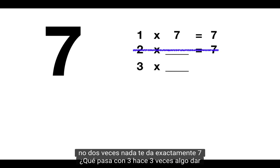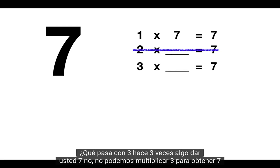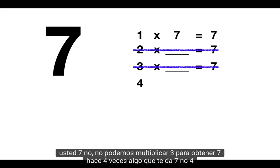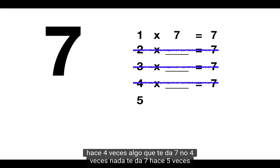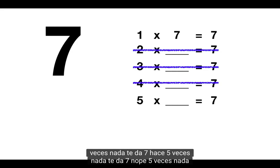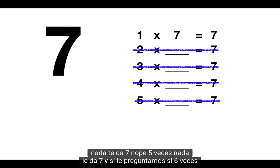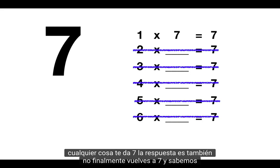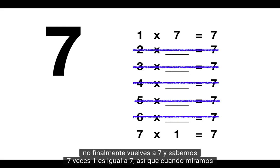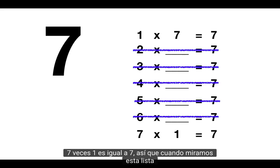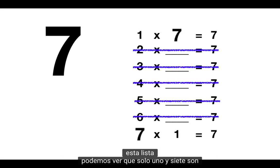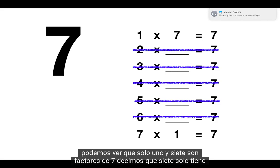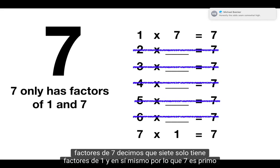What about 3? Does 3 times anything give you 7? No, we can't multiply 3 to get 7. Does 4 times anything give you 7? No. Does 5 times anything give you 7? Nope. And if we ask if 6 times anything gives you 7, the answer is also no. Finally you get back to 7, and we know 7 times 1 equals 7. So we can see that only 1 and 7 are factors of 7, so 7 is a prime number.